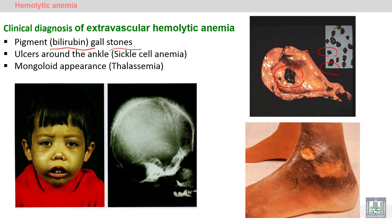In some types such as sickle cell anemia — a type of hemolytic anemia to be discussed in detail later — leg ulceration can be seen. In thalassemia, another type of hemolytic anemia, there is protrusion of the facial bones in children, giving an abnormal mongoloid appearance due to excessive production of blood cells by the bone marrow. Excessive activity of the bone marrow leads to a characteristic radiological picture called the 'hair-on-end' appearance on X-ray.